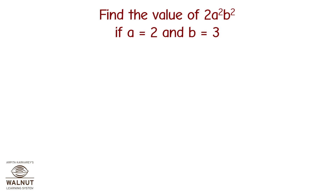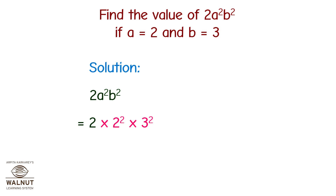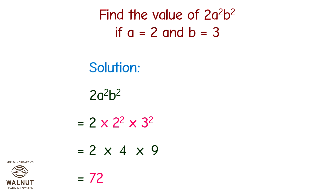Find the value of 2a raised to 2, b raised to 2, if a is equal to 2 and b is equal to 3. We have two variables a and b, and the expression is 2a² b². If we put the values of a and b, the expression becomes 2 into 2 raised to 2 into 3 raised to 2. 2 raised to 2 is 4 and 3 raised to 2 is 9, so the expression becomes 2 into 4 into 9 which is equal to 72, and that is the answer.